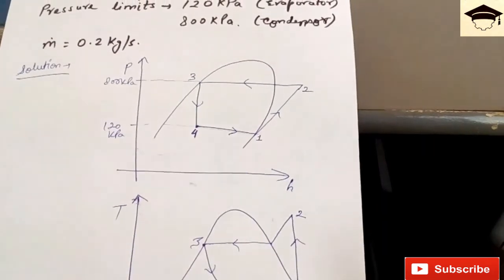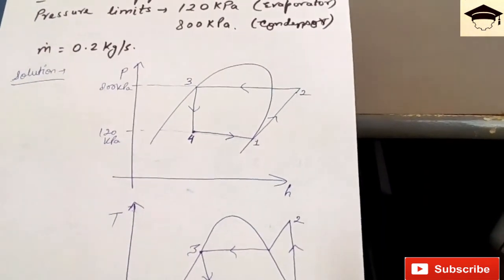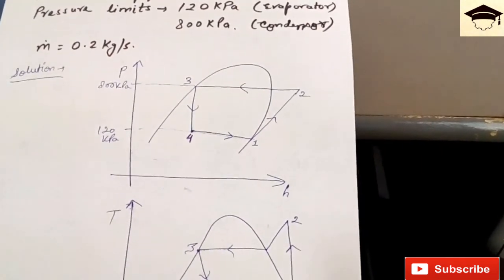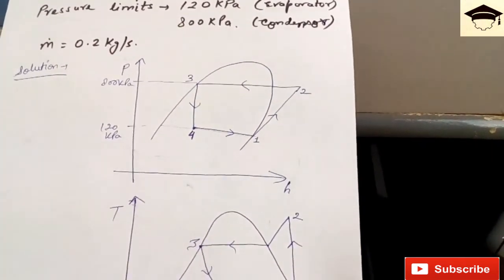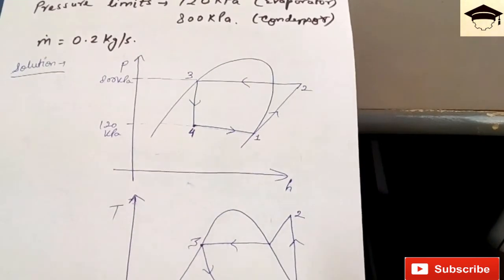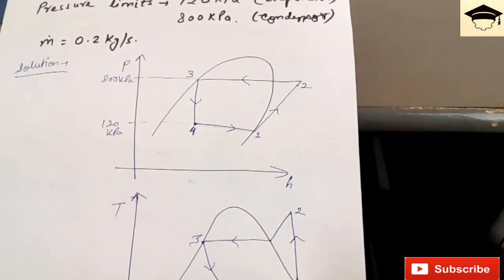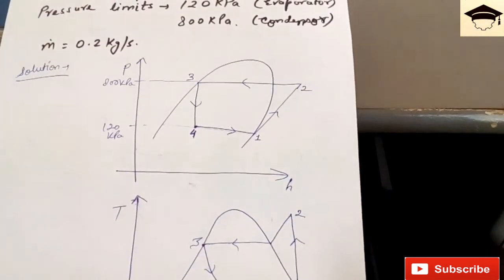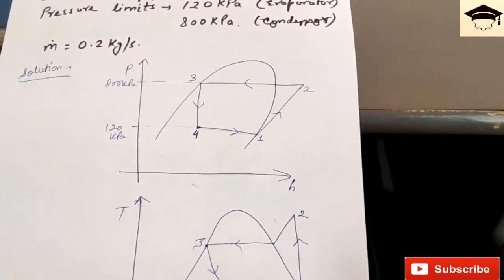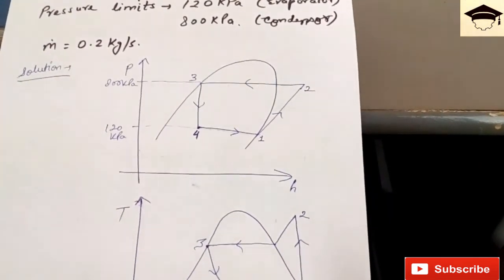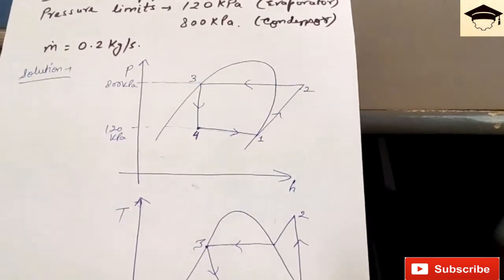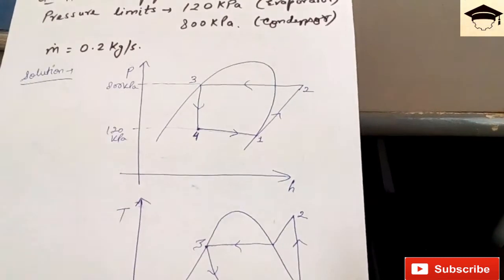Now correspondingly on the x-axis the values of h are given, so you note the values of h1, h2, h3, and h4. h3 is equal to h4. The values will be in kilojoules per kg. Here in this question mass flow rate is given as 0.2 kg per second. In many questions mass flow rate is not given, so you leave the answer in kilojoules per kg itself.